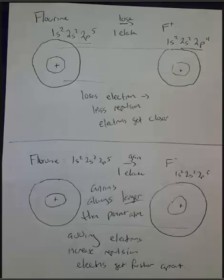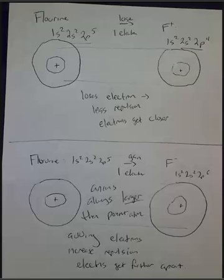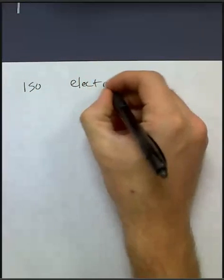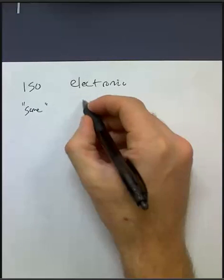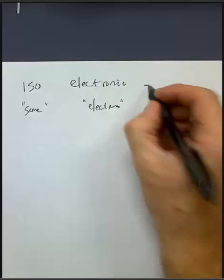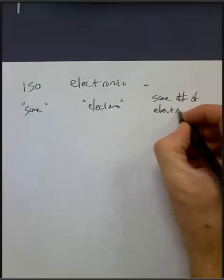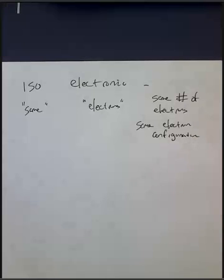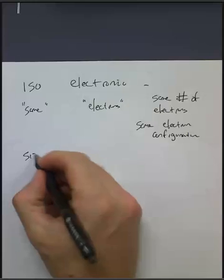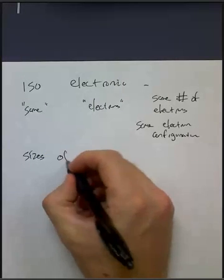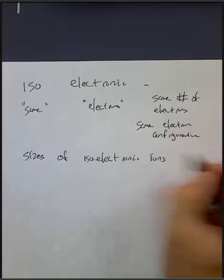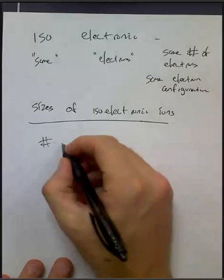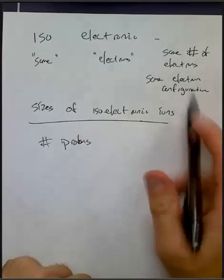Let's take a look at one additional thing, and that is going to be about isoelectronic ions. Let's break this down. What does this mean? We've got isoelectronic. Iso means the same, and electronic talks about the electrons. So isoelectronic would be same number of electrons, which means it's got the same electron configuration. Same number of electrons and same electron configuration. We want to compare the sizes of isoelectronic atoms or ions.